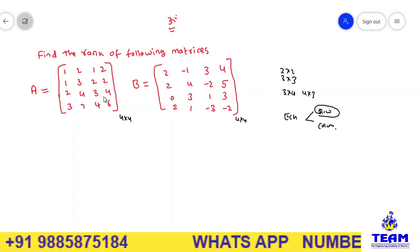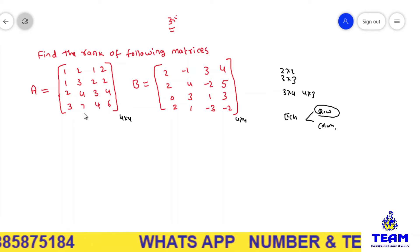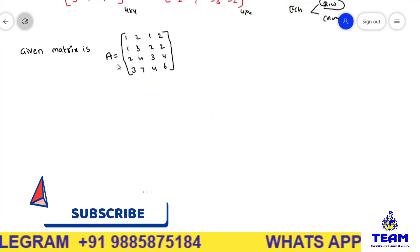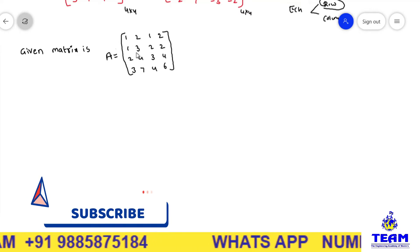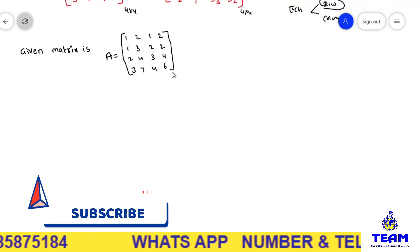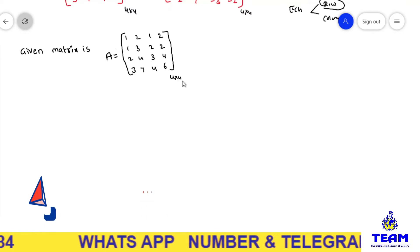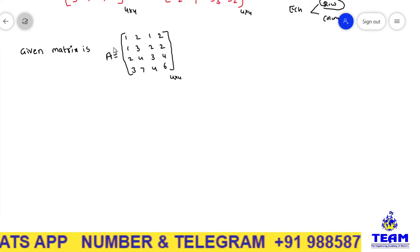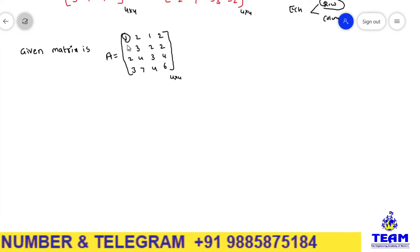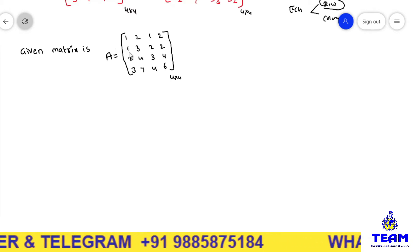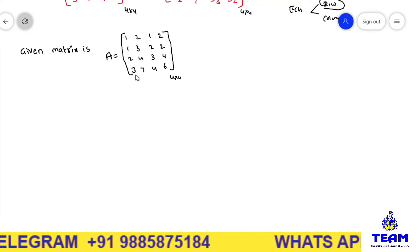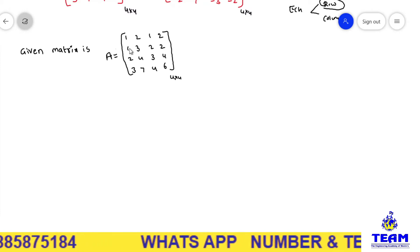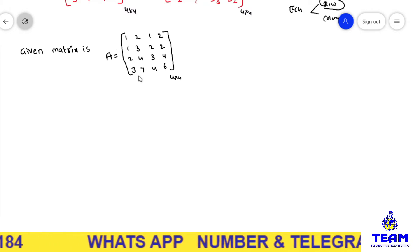After getting an upper triangular matrix, we verify the number of non-zero rows. If the number of non-zero rows is r, then the rank equals r. Now the first given problem: A equals the matrix with entries 1, 2, 1, 3, 2, 2, 4, 4, 3, 7, 4, 6 — a 4 by 4 matrix. In echelon form, first we identify the first diagonal element and use it to make the elements below it zero.